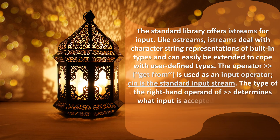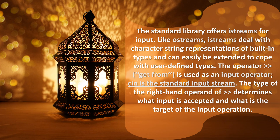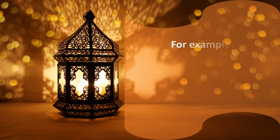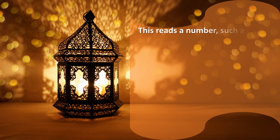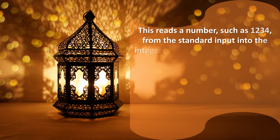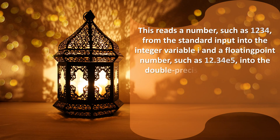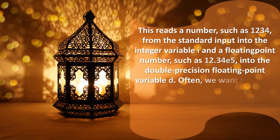The type of the right-hand operand of getFrom (>>) determines what input is accepted and what is the target of the input operation. For example: void f — int i; cin >> i; reads an integer into i. double d; cin >> d; reads a double precision floating point number into d. This reads a number, such as 1234, from the standard input into the integer variable i, and a floating point number, such as 12.34e5, into the double precision floating point variable d.